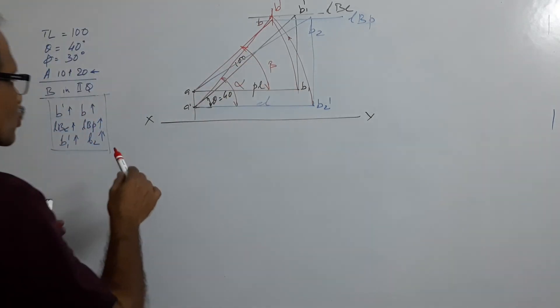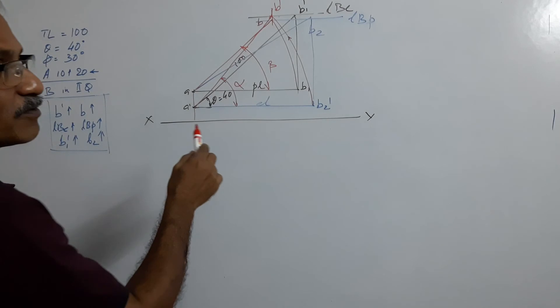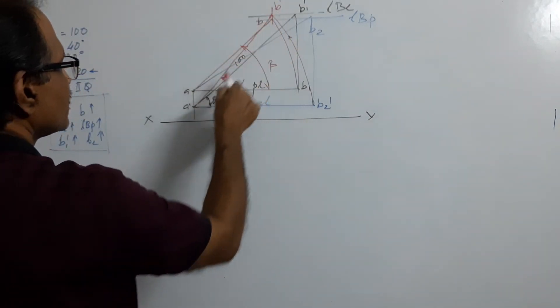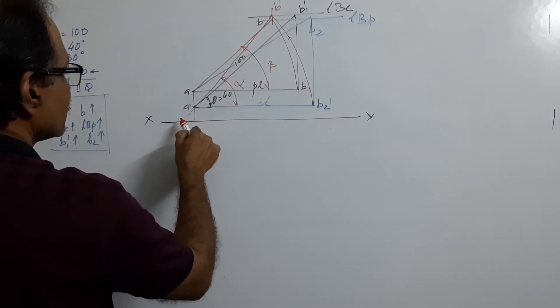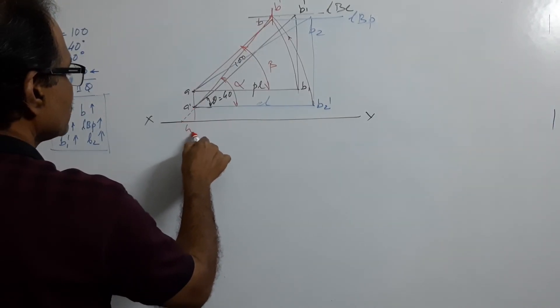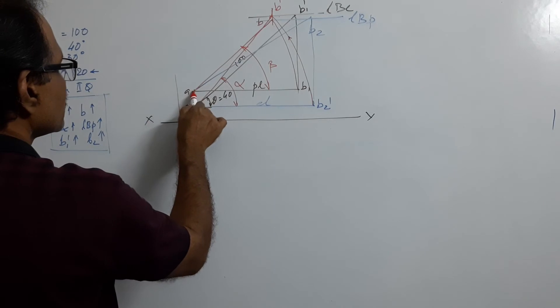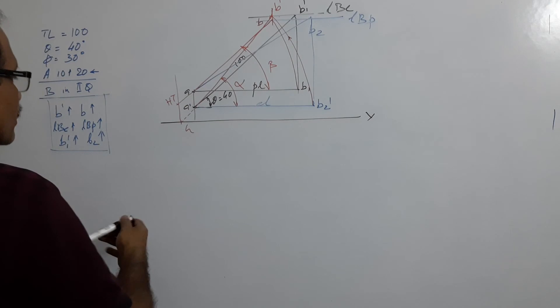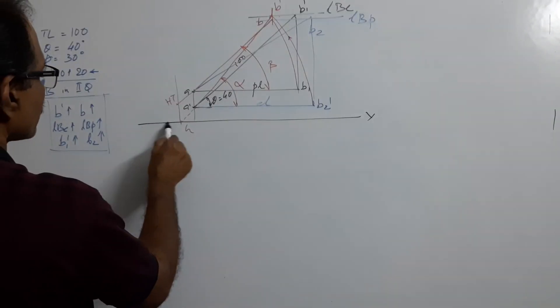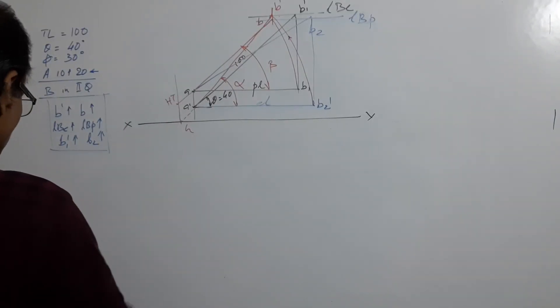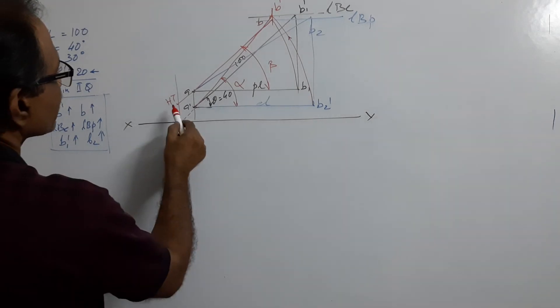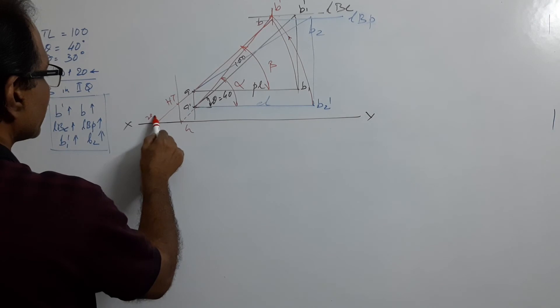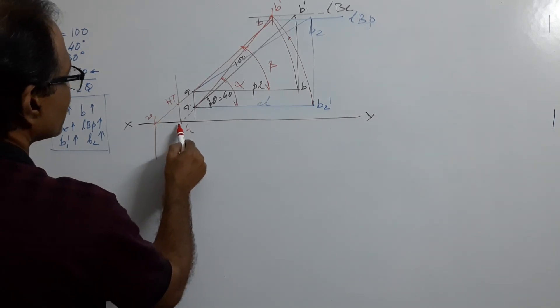To draw the loci, I mean traces. This is the elevation A dash B dash, extend it. H, draw a vertical line through X, HT. The plane, extend the plane. V, draw vertical line through V and extend the elevation.